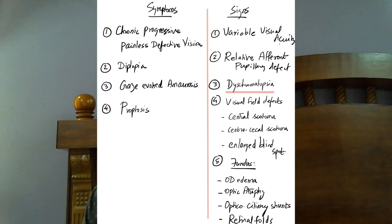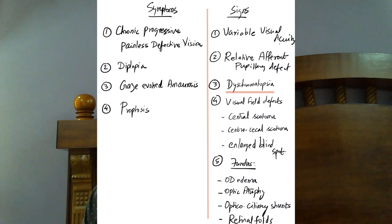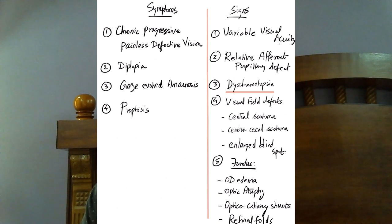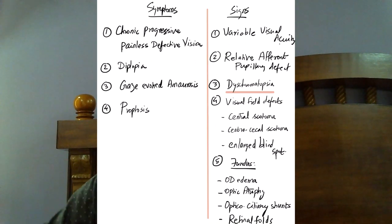To summarize: the symptoms are chronic progressive painless defective vision, diplopia, gaze-evoked amaurosis or transient obscuration of vision, and proptosis. The signs include variable visual acuity, relative afferent pupillary defect, dyschromatopsia or defective color vision, visual field defects — most commonly central scotoma or central caecal scotoma. The fundus shows optic disc edema and atrophy, optociliary shunts, and retinal folds.